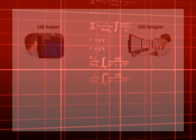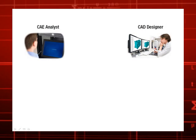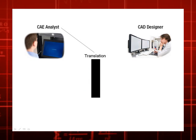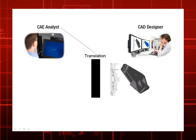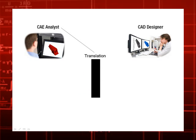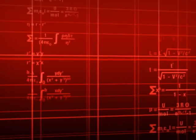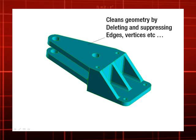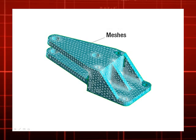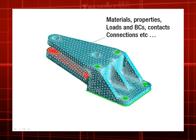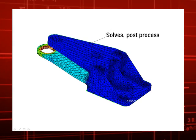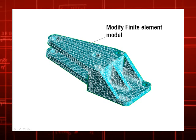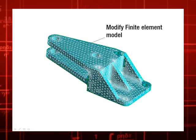For the most part, when CAE finite element analysts import the CAD geometry they obtained from the CAD designer into their CAE application, it gets translated by the CAE application's geometry translator from its native original format to another format that the CAE application can easily understand and leverage. The CAE analyst then cleans the geometry by suppressing or deleting unneeded edges or vertices, then meshes, adds materials, loads and boundary conditions, and then invokes a solver. The analyst can even modify the finite element model and perform FE-based iterations by adding nodes and elements to see how they affect the CAE study.